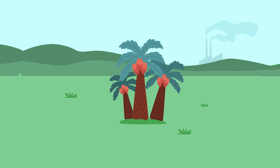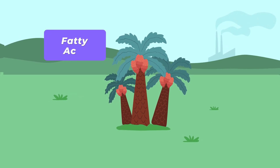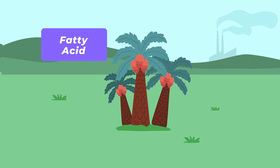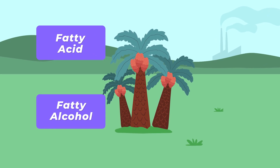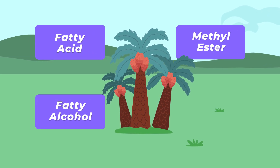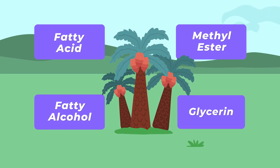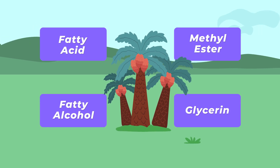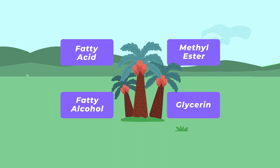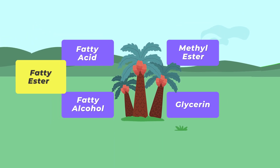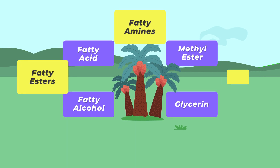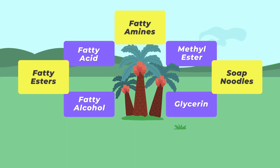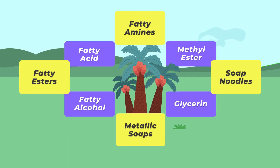Some examples of oleochemicals produced from Malaysian palm oil are fatty acid, fatty alcohol, methyl esters, and glycerin. While examples of oleochemical derivatives are fatty esters, fatty amines, soap noodles, and metallic soaps.